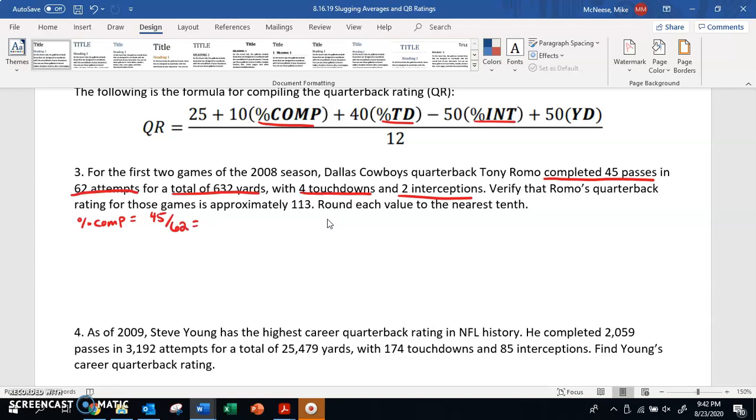As a percentage, if you divide this out, you're going to get 0.726 or 72.6%. For touchdown percentage, we're going to get 4 divided by 62 attempts, which gives us 0.065 or 6.5%. For percent interception, we're going to get 2 divided by 62 or 0.032 or 3.2%. And the last one, YD, is simply 632 divided by 62 attempts, which equals 10.2 yards per attempt.